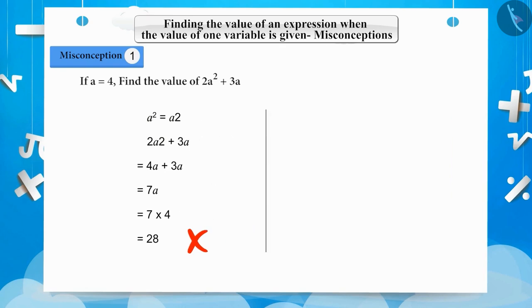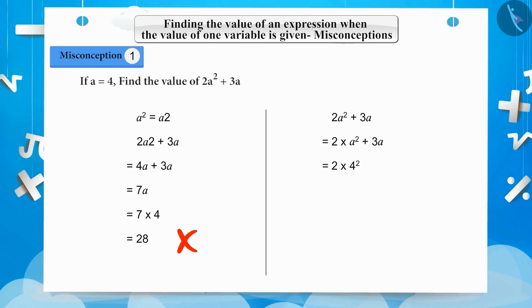Let's now see what will be the correct solution. 2a square plus 3a means 2 times a square plus 3a. Now, we will replace a with 4: 2 multiplied by 4 square plus 3 multiplied by 4. To solve in the correct sequence here, we will first multiply 2 by 4 square, then multiply 3 by 4 and then add them both. Now, we will add 32 and 12 from which we will get is equal to 44. 44 is the correct answer.